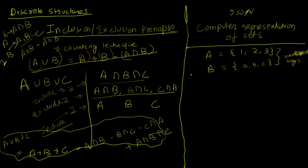The problem with representing sets in these unordered ways is that all set operations become extremely difficult. For A union B, you must go through both sets and ensure no elements are repeated — an expensive search. For intersection, you need to compare each element in A with potentially every element in B in the worst case. These operations are computationally expensive.